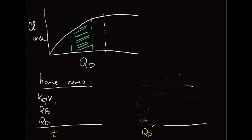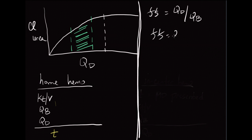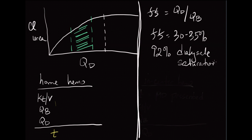Let's look at the flow fraction in more detail. The flow fraction is a very straightforward formula — denoted FF — and it's the ratio of the dialysate flow rate over the blood flow rate. What we want in a home hemo patient is a flow fraction of about 30 to 35%. The reason for this number is that a dialysate-to-blood flow ratio of 30 to 35% yields about 92% dialysate saturation of urea — meaning you get very high urea clearance for the least amount of dialysate flow. This is something prescribed by the physician.